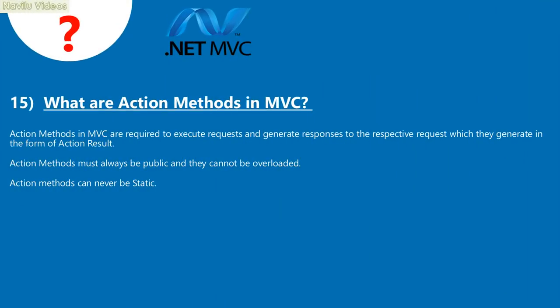Question 15: What are action methods in MVC? Action methods in MVC are required to execute requests and generate responses in the form of action results. Action methods must always be public, cannot be overloaded, and can never be static.